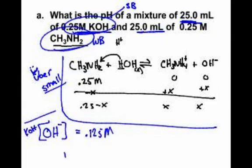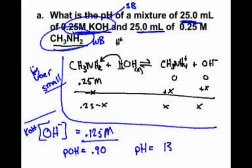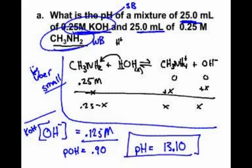So therefore, the pOH would be equal to just the negative log of 0.125, which is 0.90. And then the pH — you subtract from 14 — is 13.10. So we didn't read the problem very well.